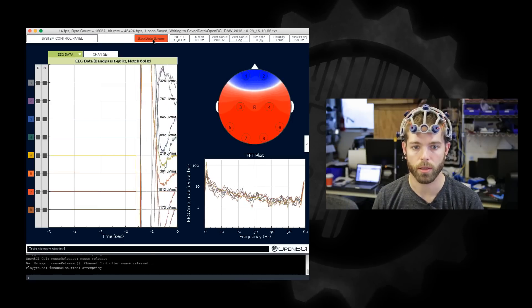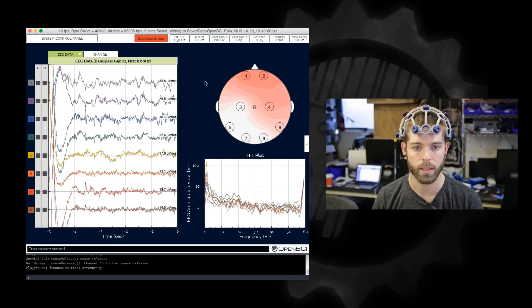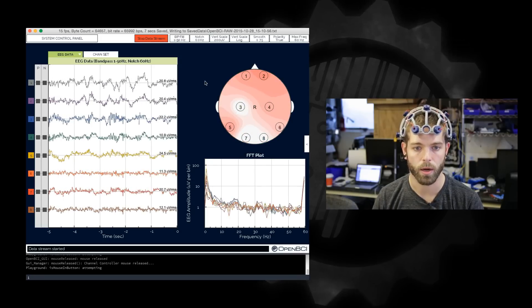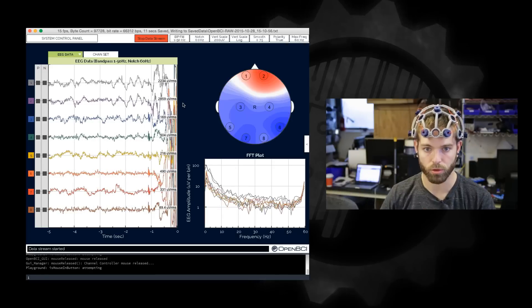So if I click start data stream you can see that I am now streaming eight channels of EEG data from the OpenBCI device which is mounted in the Ultracortex.